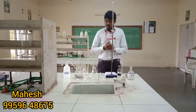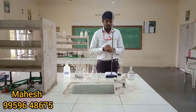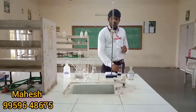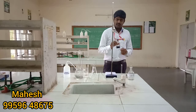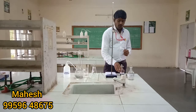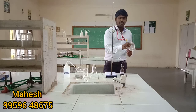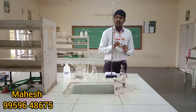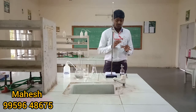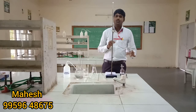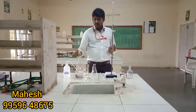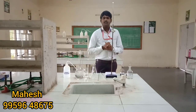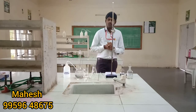In this experiment, the chemicals required are: EBT indicator, Eriochrome Black T indicator, and buffer solution — ammonium chloride and ammonium hydroxide. In this buffer solution, pH is 9 to 10. And EDTA, concentration is 0.01 M.